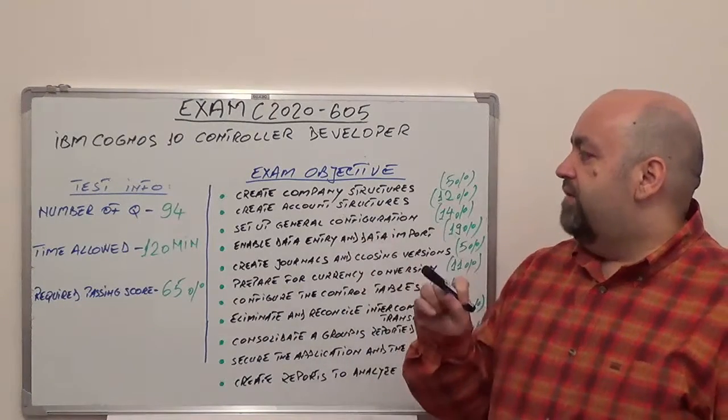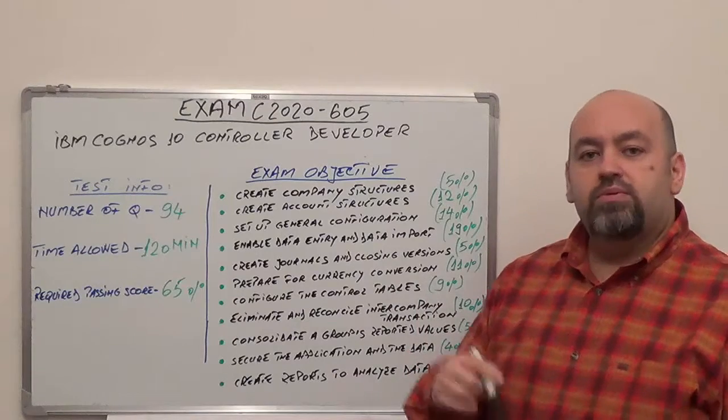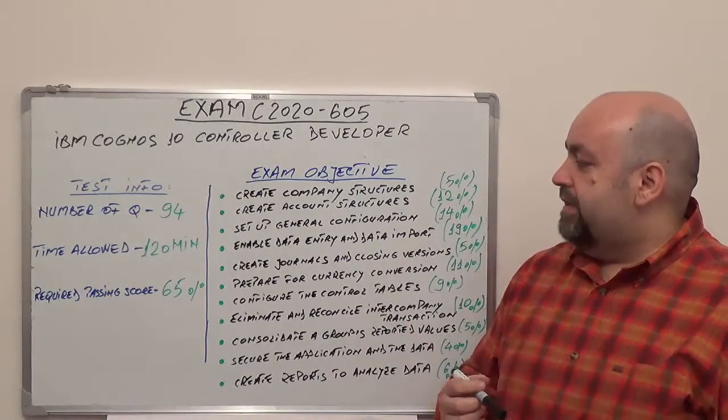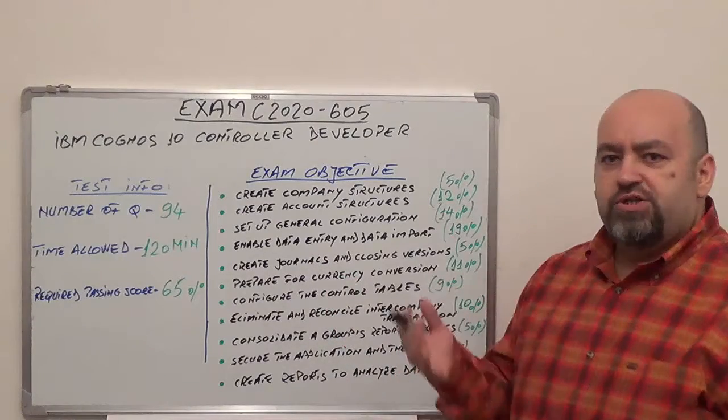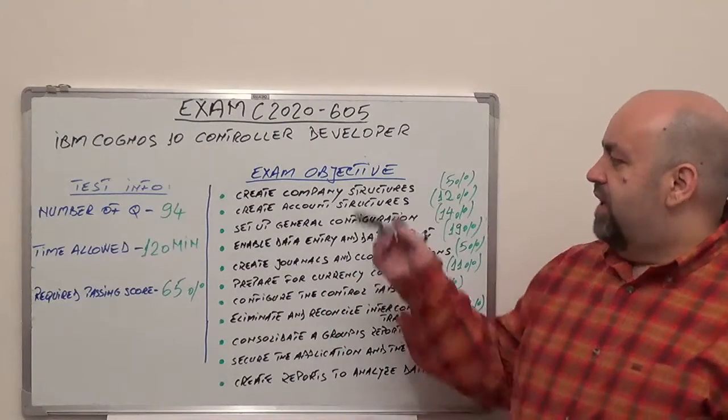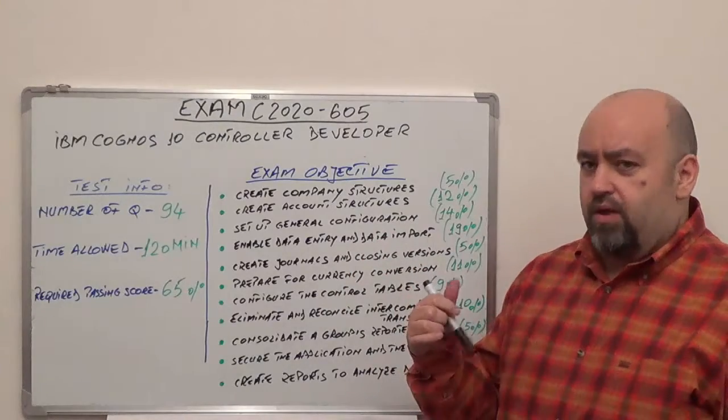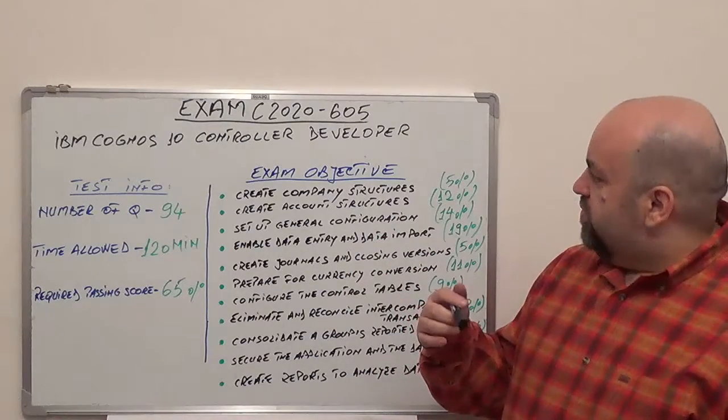First, we're going to have 94 questions. The time allowed is 120 minutes. And the required passing score is 65% minimum. I will let you know on this exam, we're going to have 11 sections. And now I'm going to show you each one of them.